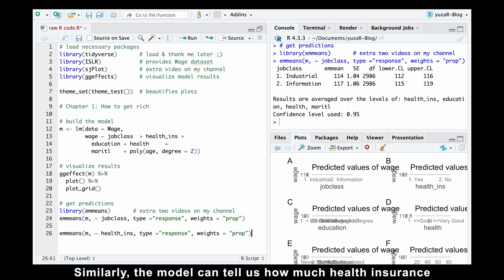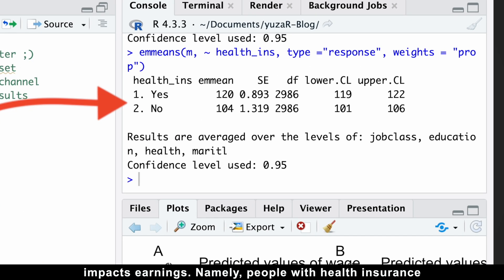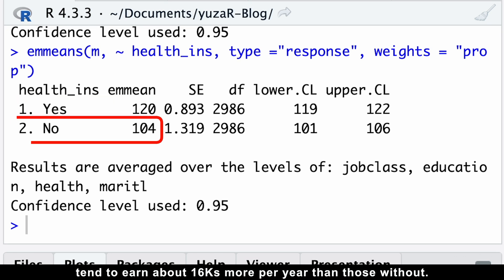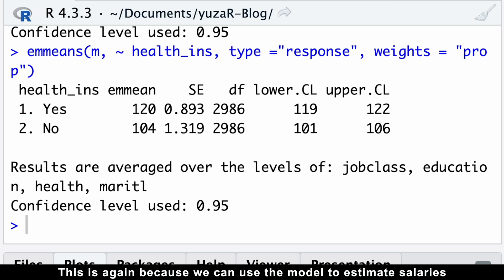Similarly, the model can tell us how much health insurance impacts earnings. Namely, people with health insurance tend to earn about $16,000 more per year than those without. This is, again, because we can use the model to estimate salaries specifically for those with and without health insurance while holding all other factors constant.